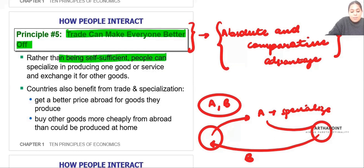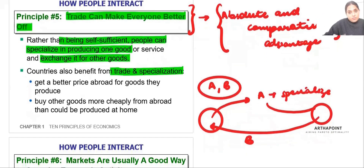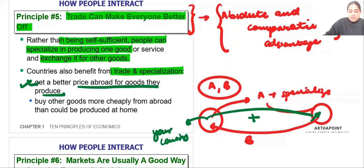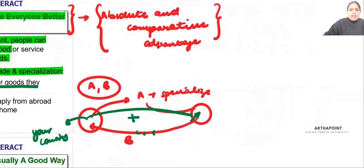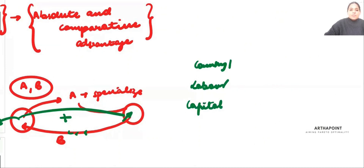Rather than being self-sufficient, people can specialize in producing one good or service and exchange it for others. Countries can also benefit from trade and specialization — you get a better price abroad for the goods you produce. Imagine country one is labor intensive with a lot of labor but less capital, while country B has less labor but more capital.